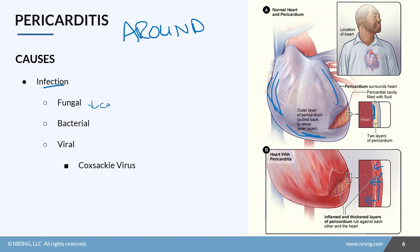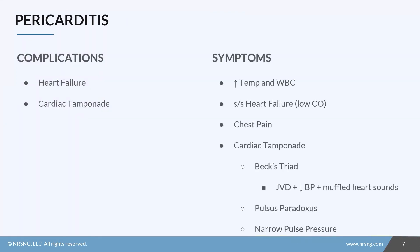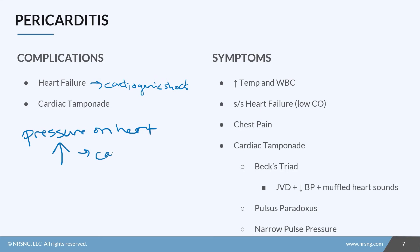Pericarditis is caused by infectious sources — it can be bacterial, fungal (less commonly), or viral. A common virus causing pericarditis, especially in children, is the coxsackie virus. As the pericardium becomes more inflamed and fluid builds up, pressure on the heart increases, making it harder to pump. This can lead to signs of heart failure, potentially developing into cardiogenic shock, and also cardiac tamponade.